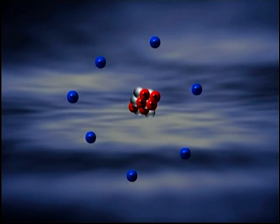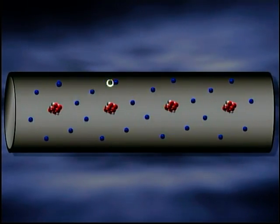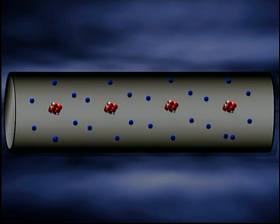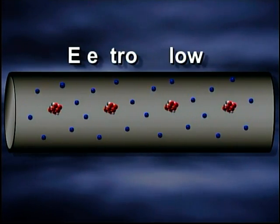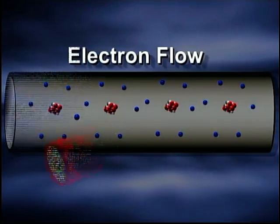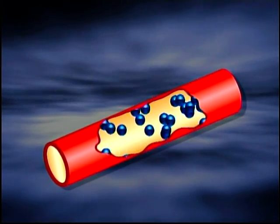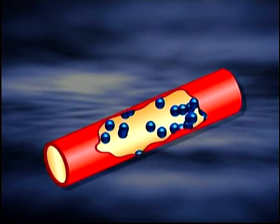Electricity is produced when electrons are freed from their atoms and are moved from atom to atom by the attraction and repulsion of protons and other electrons. This movement of free electrons is known as electron flow. When a large number of electrons flow from one atom to another in one general direction, an electrical current is produced.